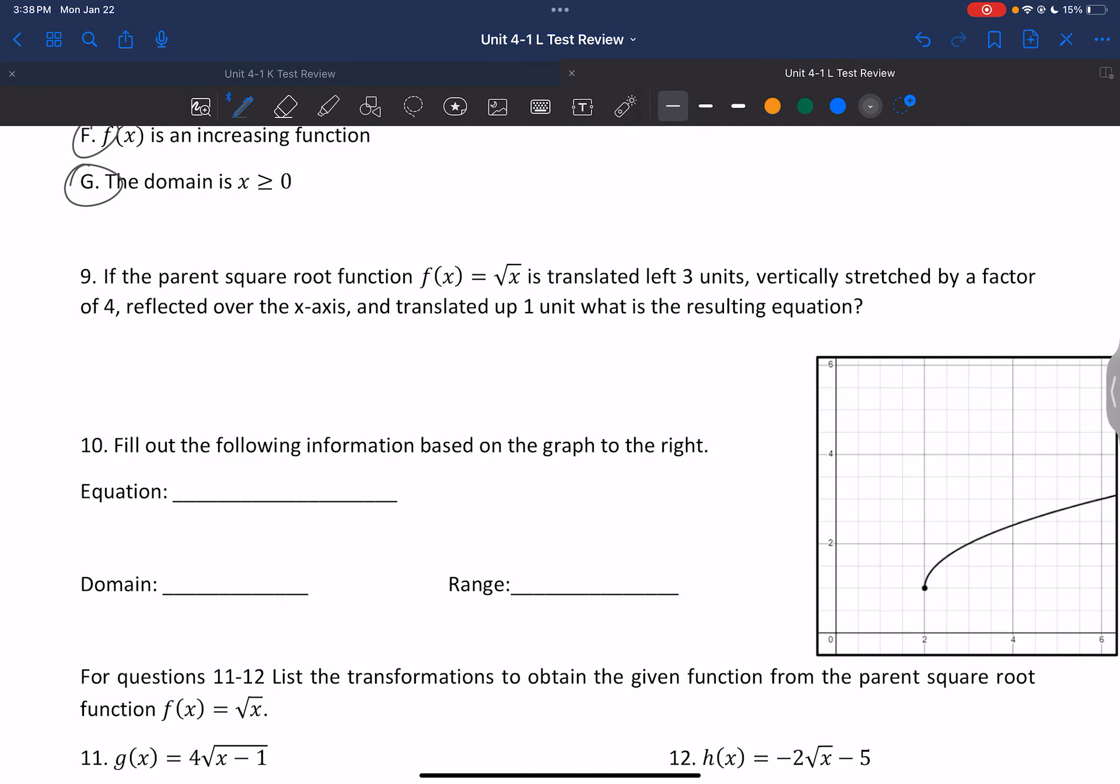All right. Parent square root function. So we have the parent square root function. Let's create a new function here. Now if it's translated left 3 units, let's do some highlighting. Left 3 units. That would mean that I would have a plus 3 on the inside. Also, it has vertically stretched by a factor of 4. Vertically stretched would mean that I'm multiplying by that number out in front. Reflected over the x-axis. So that means we have a negative sign out in front. And finally, it translated up. Translated up one unit. So that would be a plus 1 on the end.